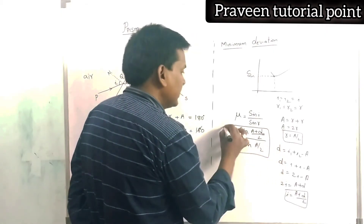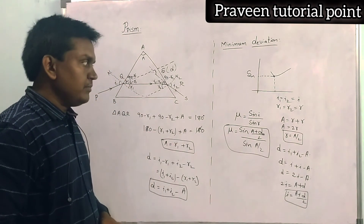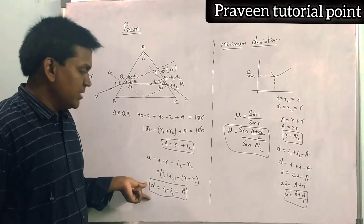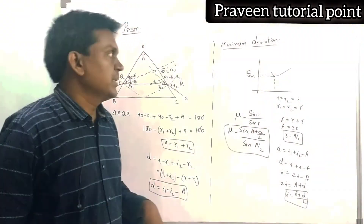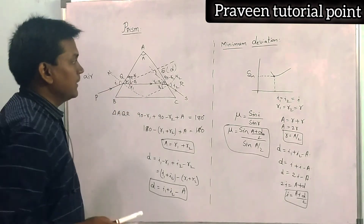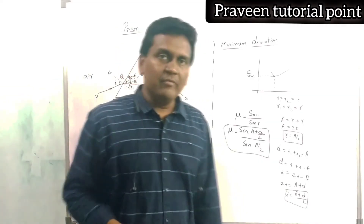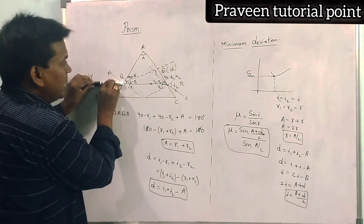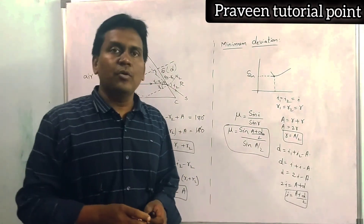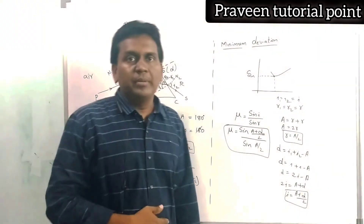So to find the refractive index of the prism: mu equals sin((A plus Dm) / 2) divided by sin(A / 2). Using this prism derivation we can find the angle of the prism, the deviation made by the prism, and the refractive index of the prism. Additionally, at minimum deviation the ray passing through the prism will be parallel to the base, and the angles of incidence and emergence will be symmetric. This concludes the topic of the prism and its derivation.